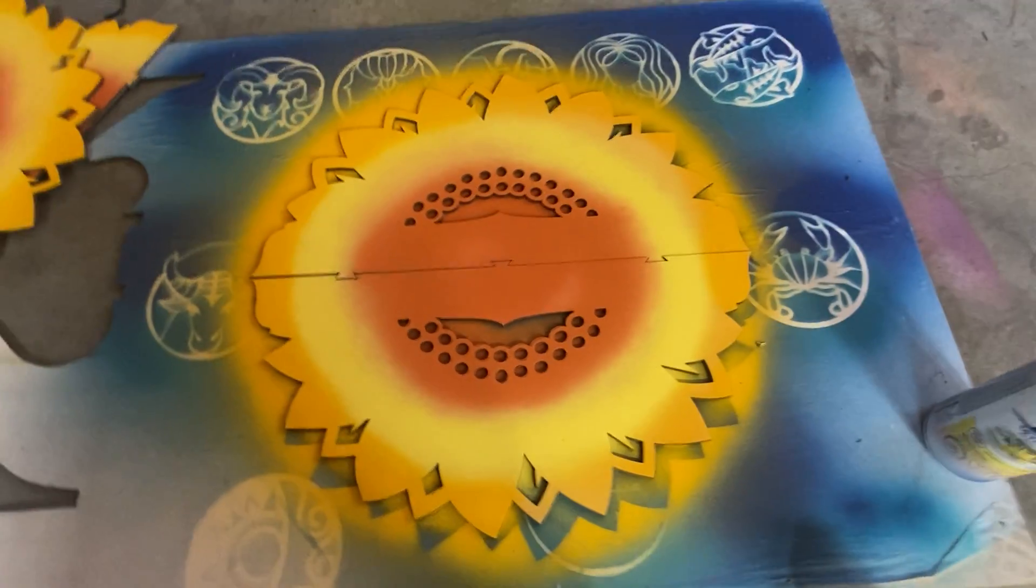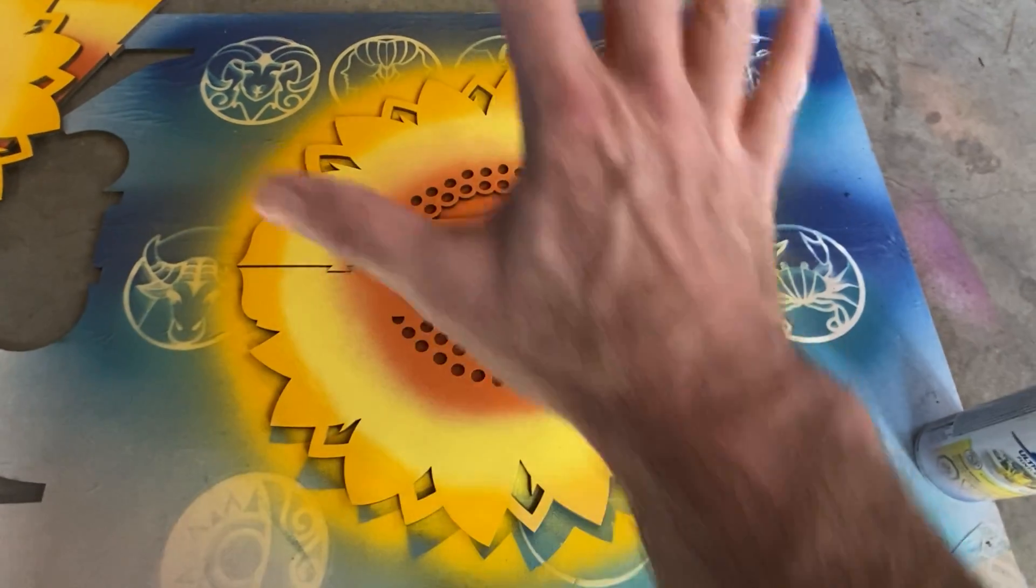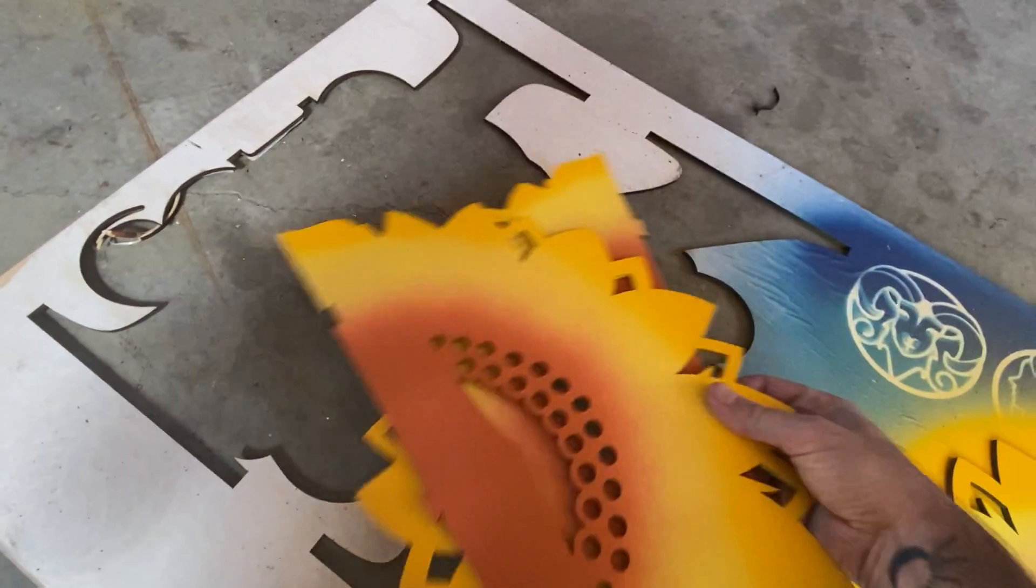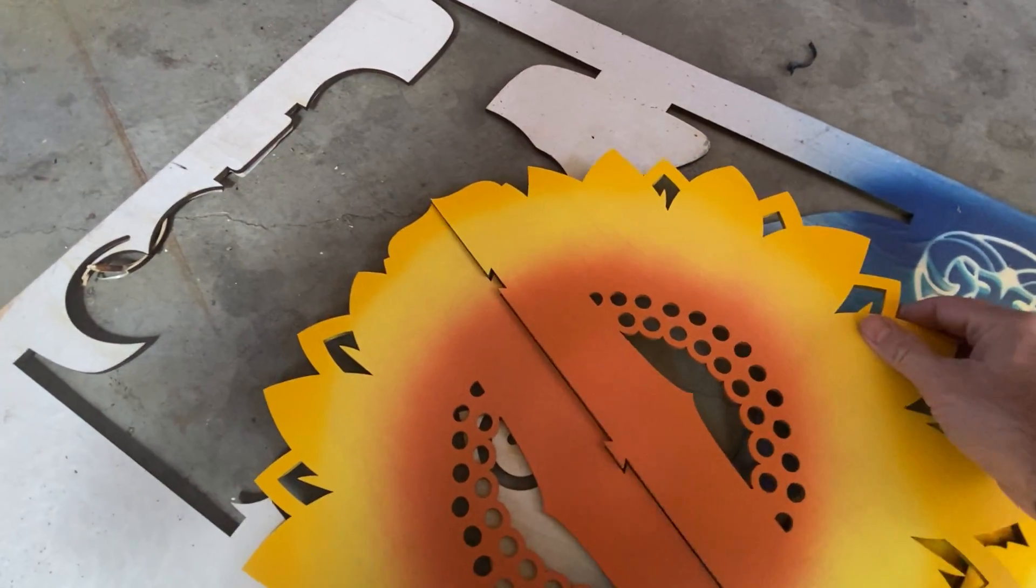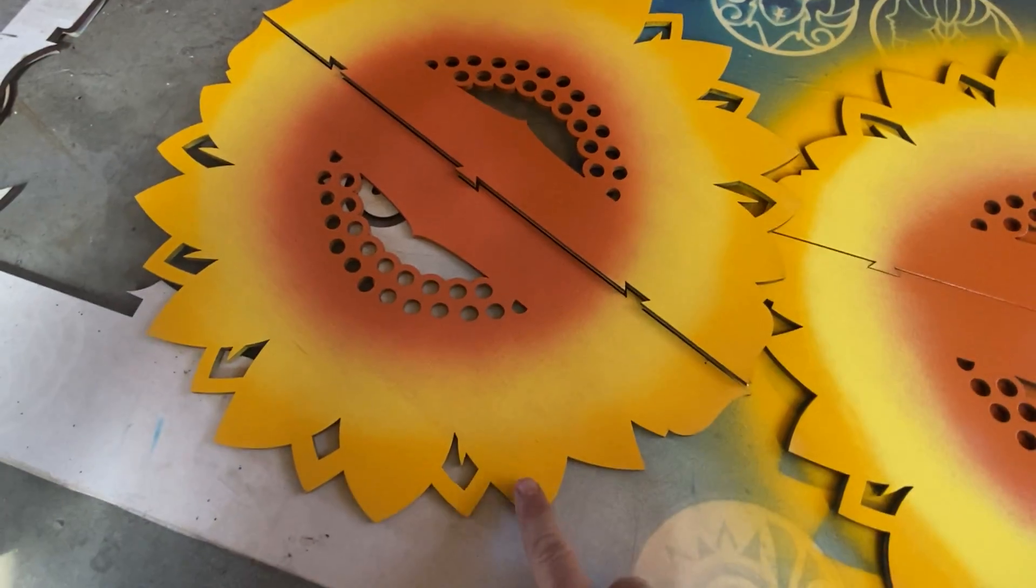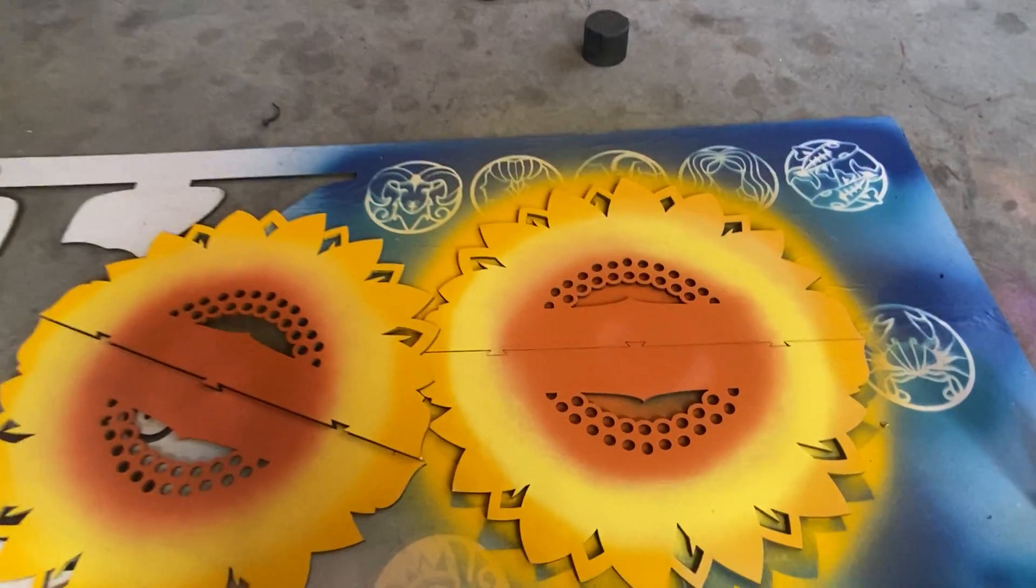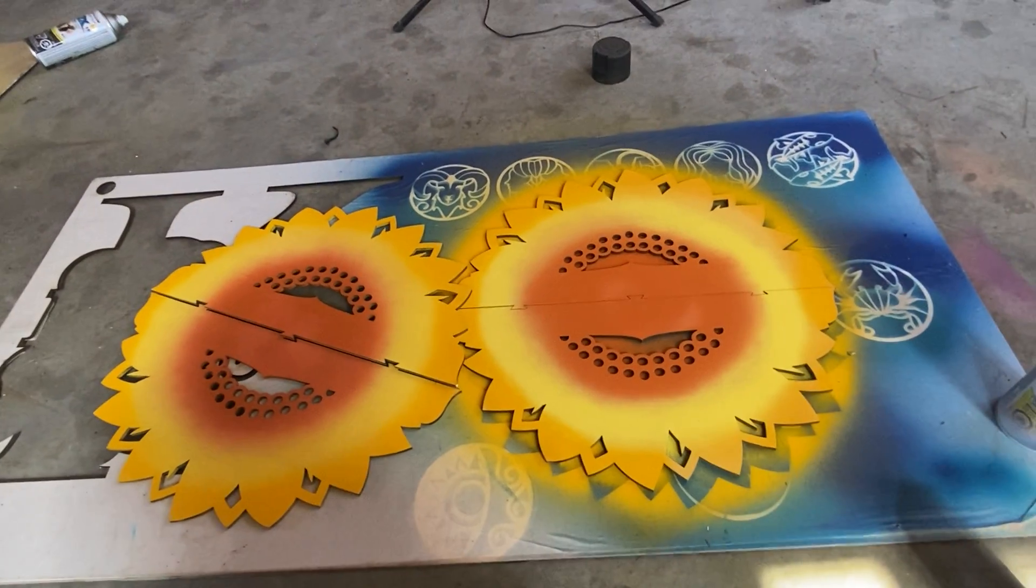And then you just lay your second layer over top and you are done. This one's done much nicer because I didn't run out of paint. But you can see the nice gradient into the yellow and then into the orange. And there you go, that's it. Let it dry and that's all I do.